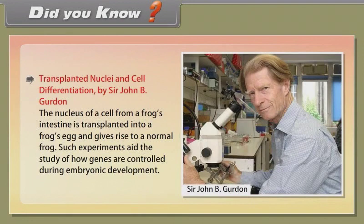Did you know? Transplanted nuclei and cell differentiation — by Sir John B. Gurdon: the nucleus of a cell from a frog's intestine is transplanted into a frog's egg and gives rise to a normal frog. Such experiments aid the study of how genes are controlled during embryonic development.